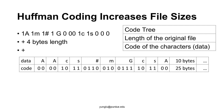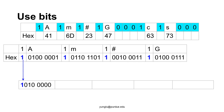How can we express the information using bits? First, let's write down the ASCII code for the characters. A is 65 in decimal and 41 in hexadecimal. M is 6D in hexadecimal. Pound sign is 23 in hexadecimal. The 1s and 0s for control are marked. We need to use only 1 bit for each 1 or 0 for control. The very first bit is a control bit and it is 1.